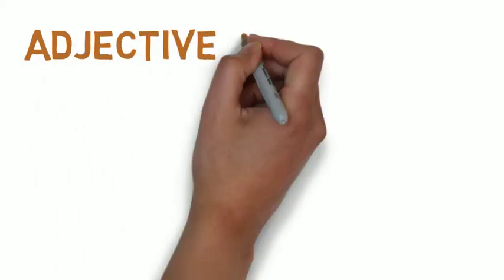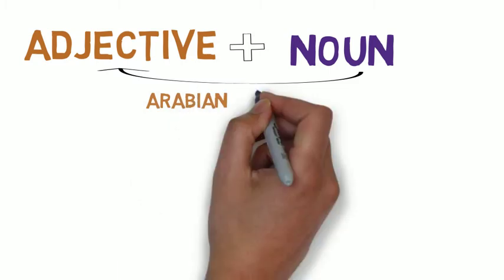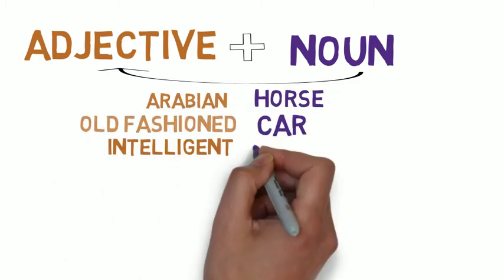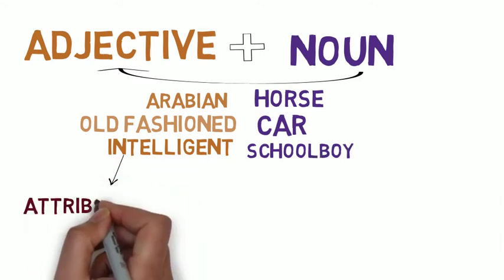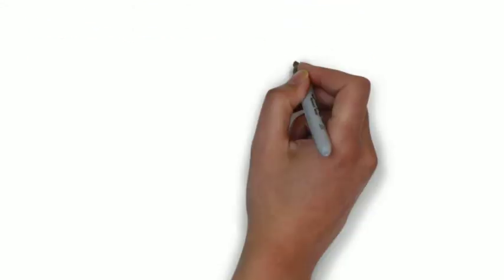An adjective is either placed before a noun, like an Arabian horse, an old-fashioned car, or an intelligent schoolboy. In this case, it's called an attributive adjective, because it describes a noun that comes after it.